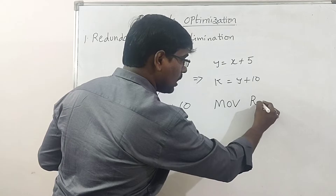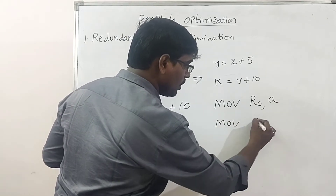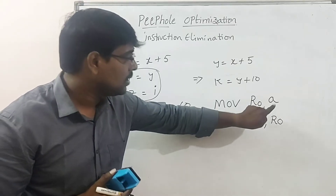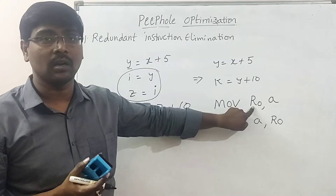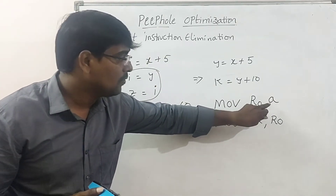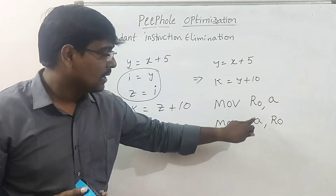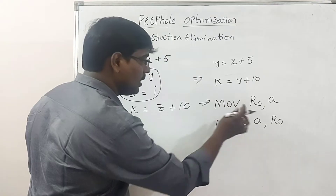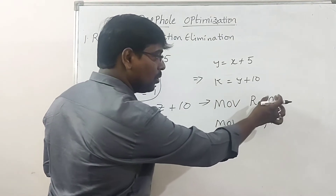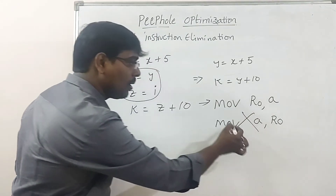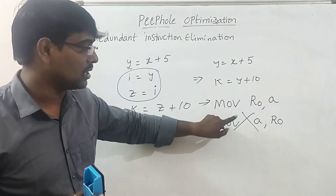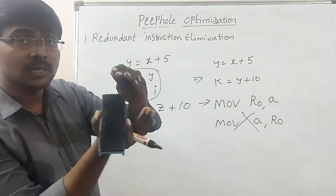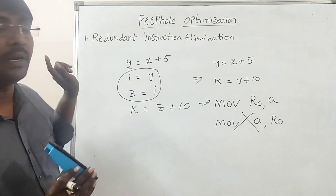For another example using assembly: MOV R0, A — MOV A, R0 — MOV R0, A — MOV A, R0. Here the value of A is assigned to R0. By the first statement, the value is already available in both A and R0. The second MOV A, R0 is redundant — no need to copy again. We eliminate this redundant instruction. If any instruction is repeated, eliminate it immediately.